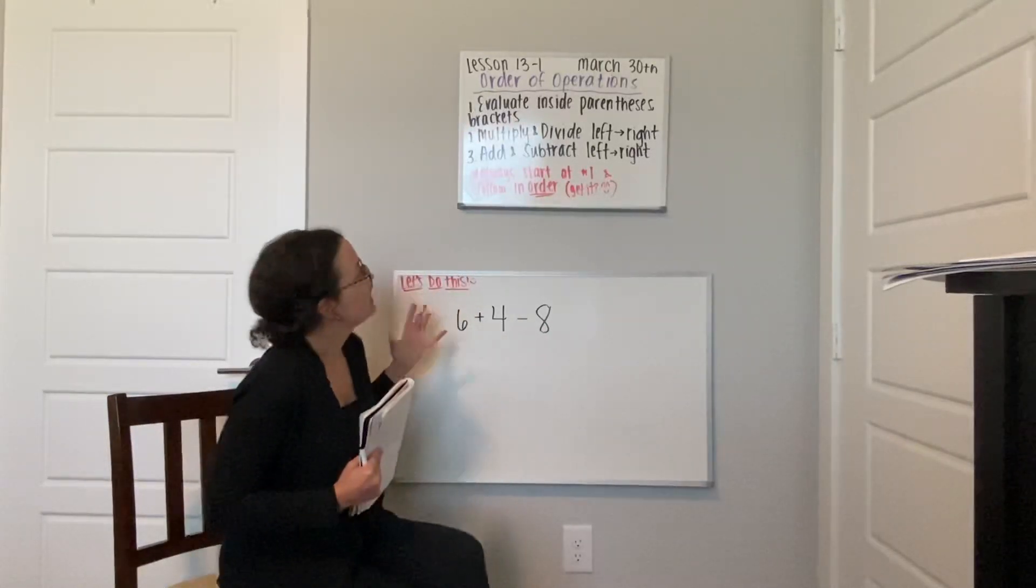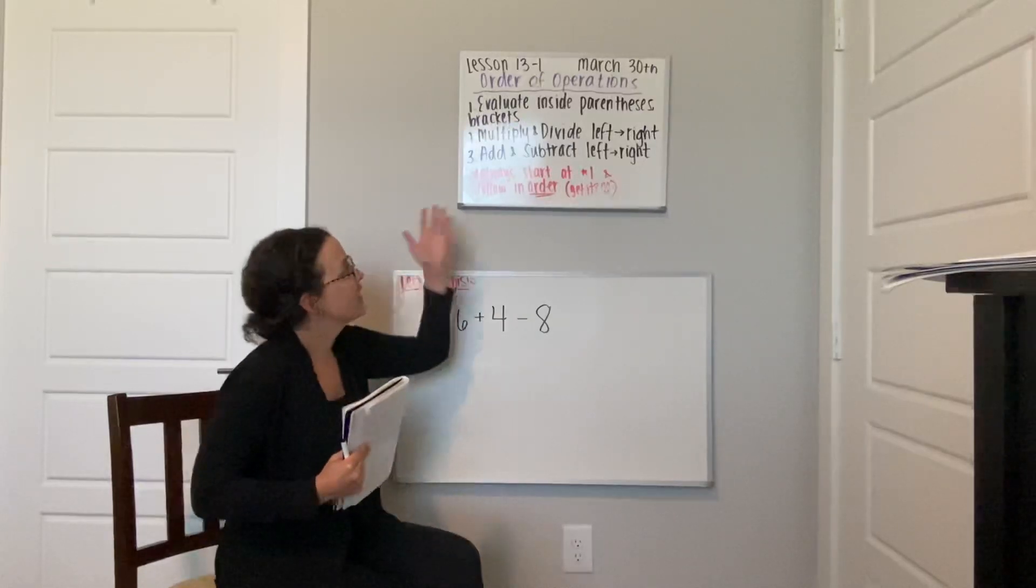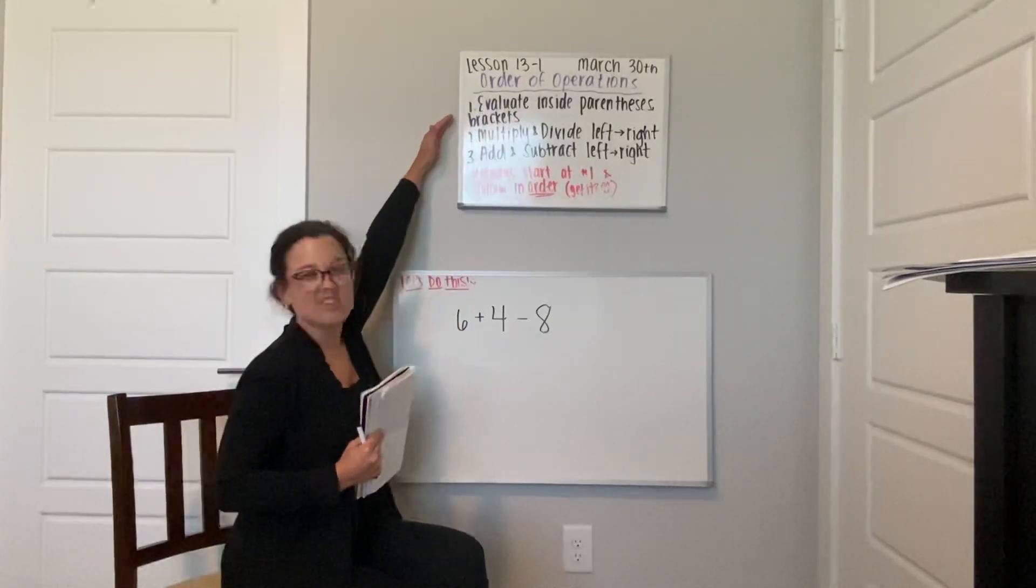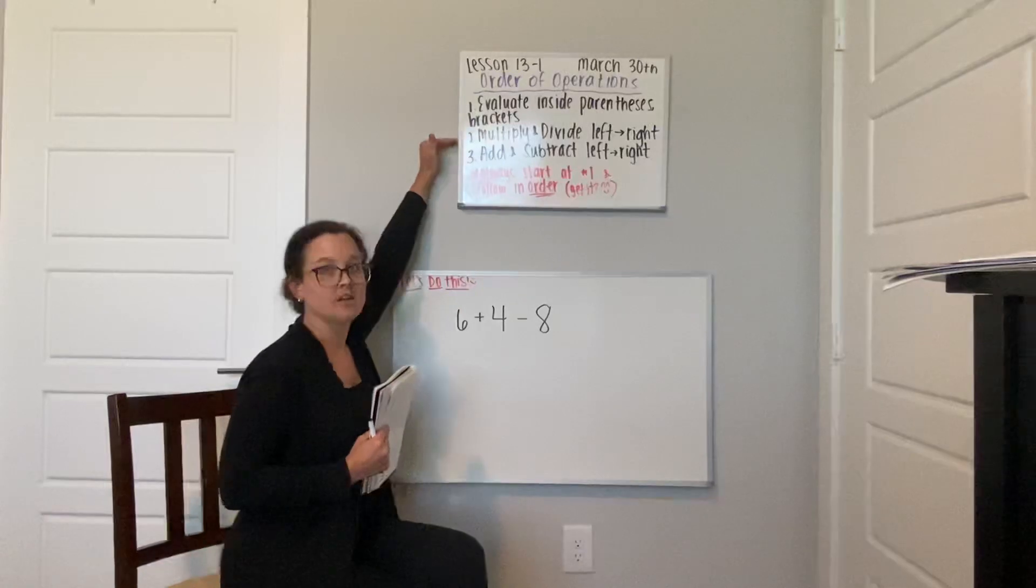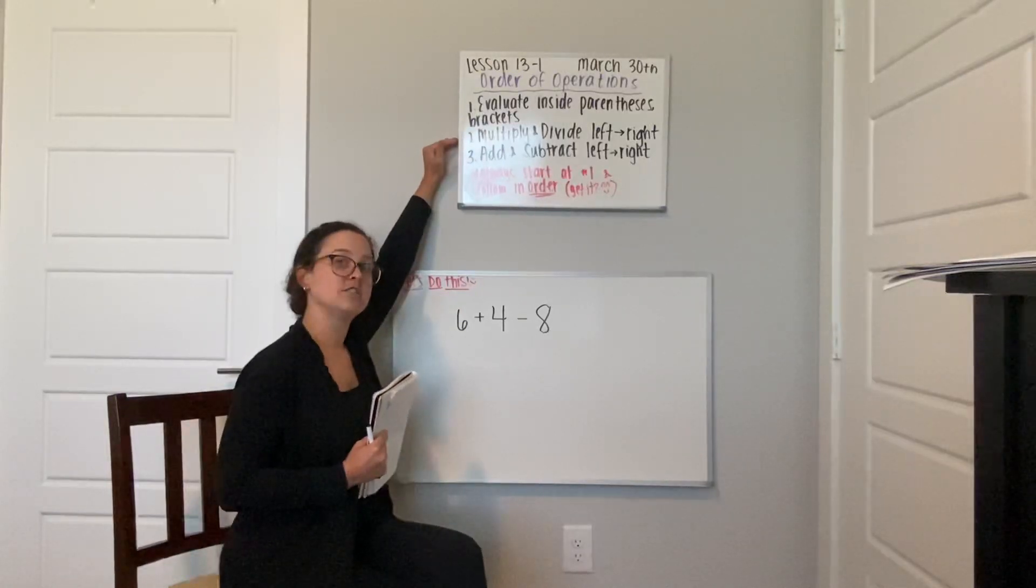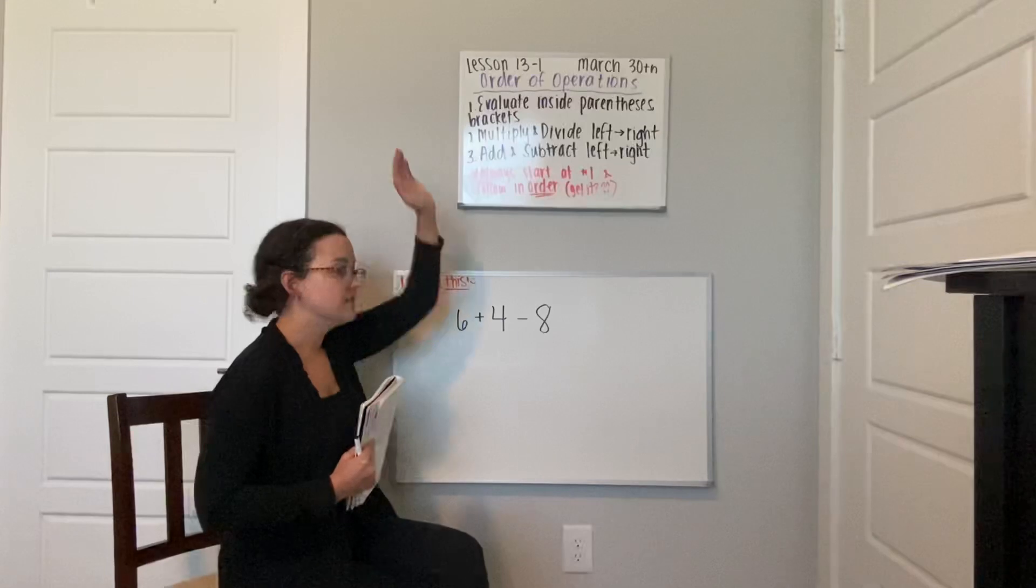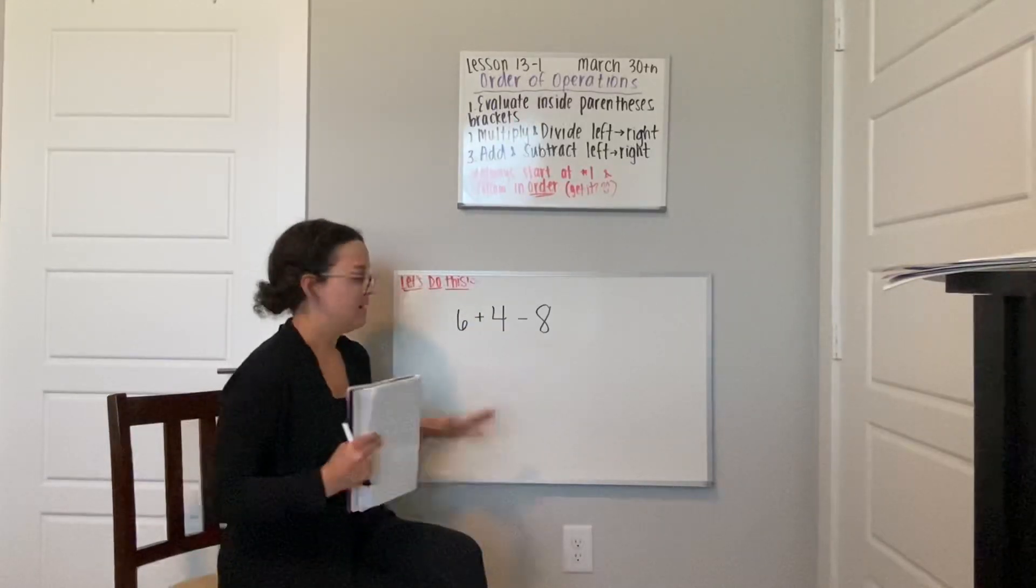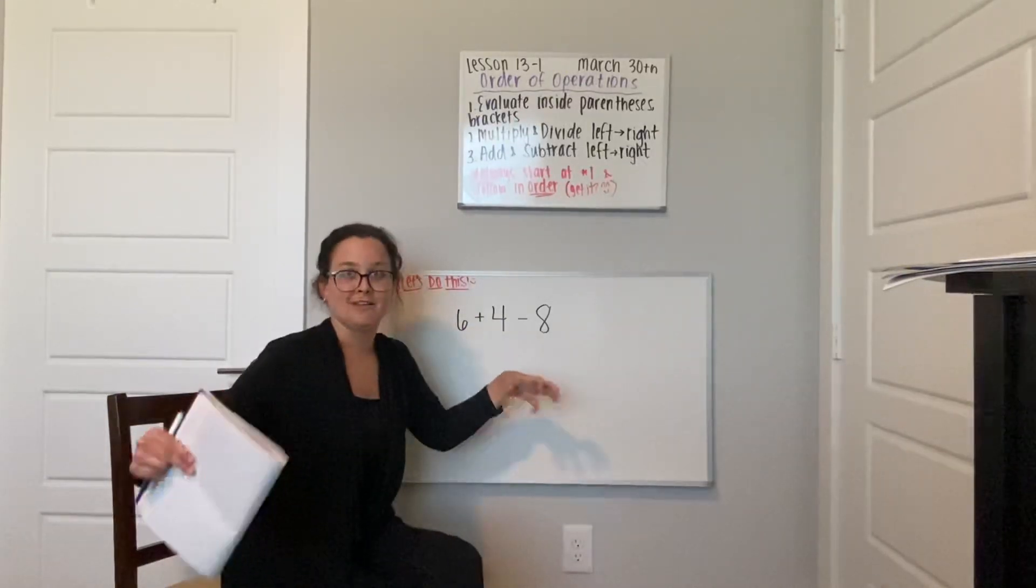And then you're going to add and subtract from left to right. So again, always start at number one. If there are no parentheses or brackets, you're going to go to number two. If there's no multiplication and division, you're going to go to number three, which will lead us to our first example. I'm going to start small and then start adding those.